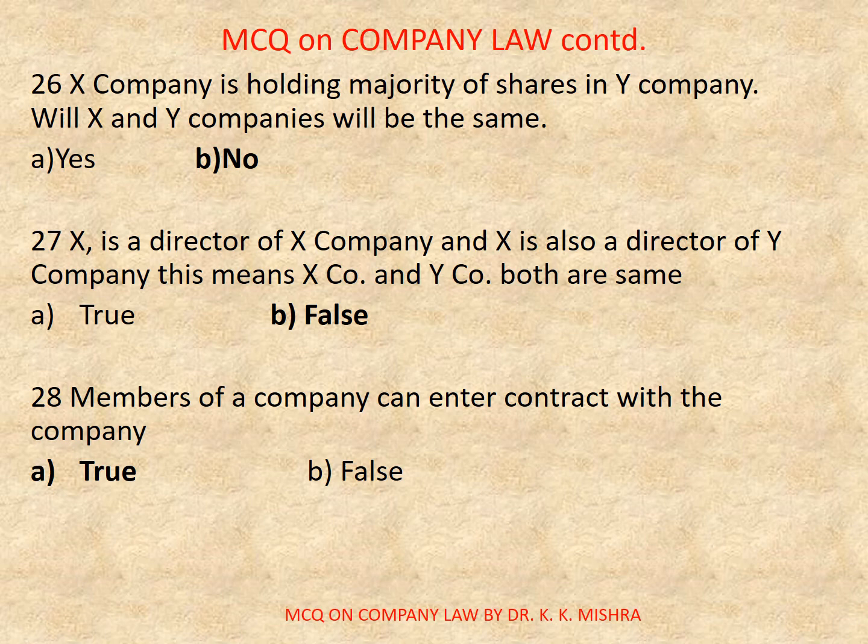Question number 27: X is a director of X company and X is also a director of Y company. This means that X company and Y company both are the same. Options are: A) True, B) False. Correct option is B, False.